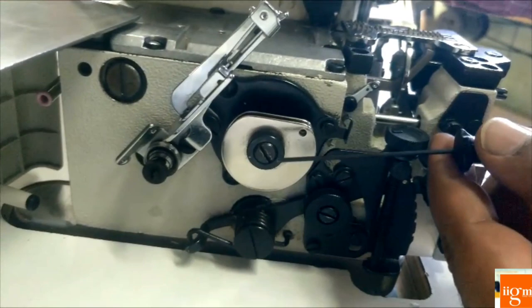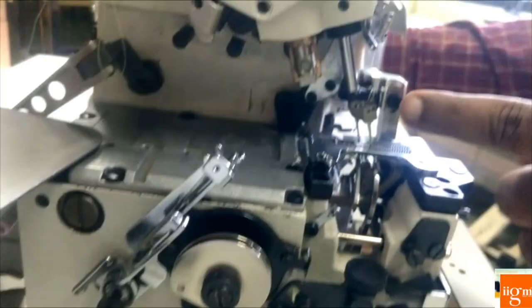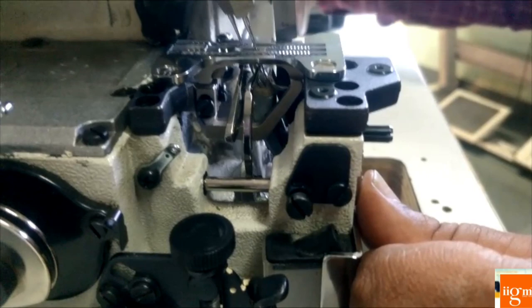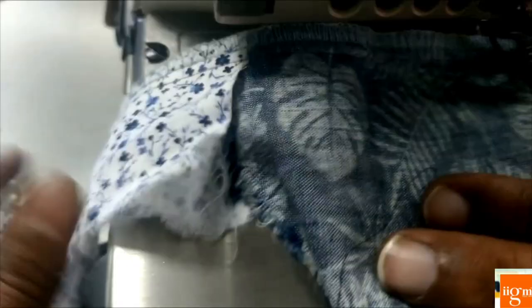When we change this stitch, by loosening this one screw and one more second screw, these two screws, and keep this needle bar to the top most position and push this lever and rotate so that at one point the machine gets locked and further this goes down we can change the stitch length to more or less.